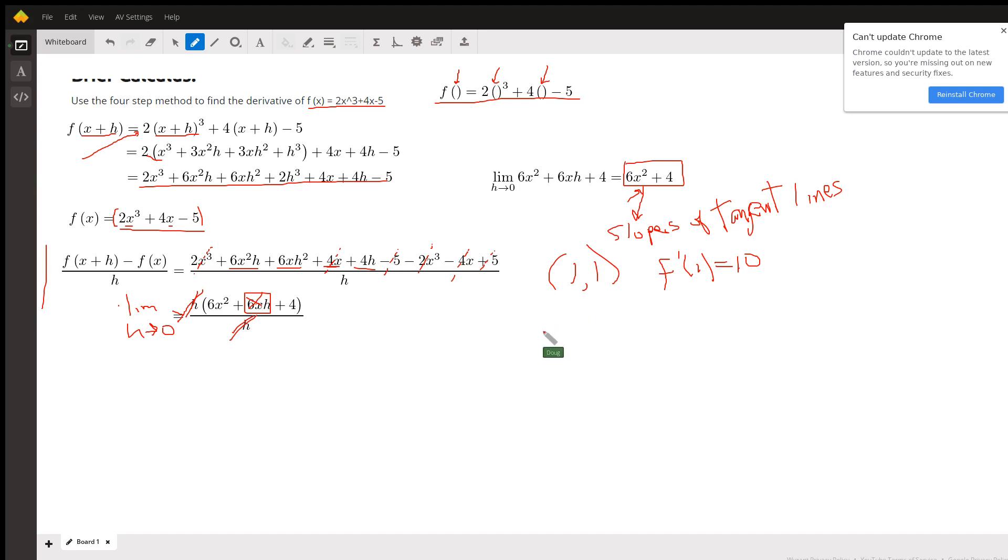Now I can write the equation of the tangent line as y minus y sub 1, that's this one right here, equals the slope, which is 10, times the quantity x minus x sub 1, where x sub 1 is 1.